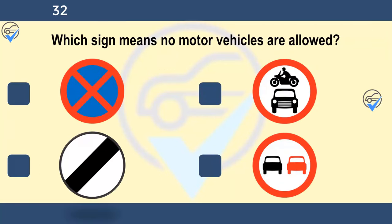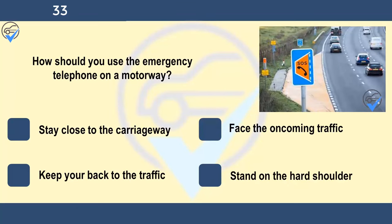Which sign means no motor vehicles are allowed? You'll generally see this sign at the approach to a pedestrian-only zone. How should you use the emergency telephone on a motorway? Stay close to the carriageway, face the oncoming traffic, keep your back to the traffic, or stand on the hard shoulder.